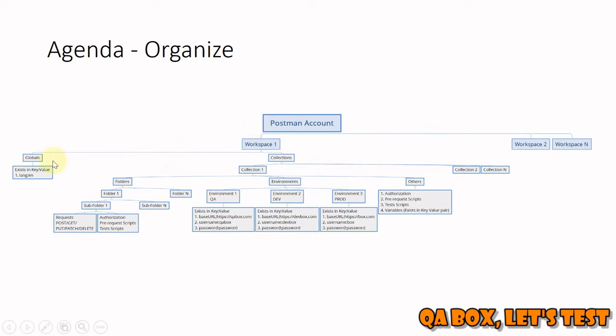Globals is a place where you define global variables. As the name suggests, globals are accessible to all the collections within that workspace. We'll talk more about variables in upcoming videos, but this is just for this particular video. You can have multiple collections within a workspace.